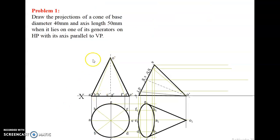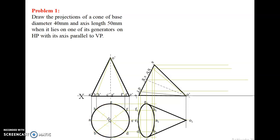One of the generators is lying on HP. Let us go to the sum and see how we can solve it. First, we are going to draw a circle of 20 mm radius. Draw a circle of 20 mm radius and divide the circle into eight equal parts — 360 degrees divided by eight, which is 45 degrees.